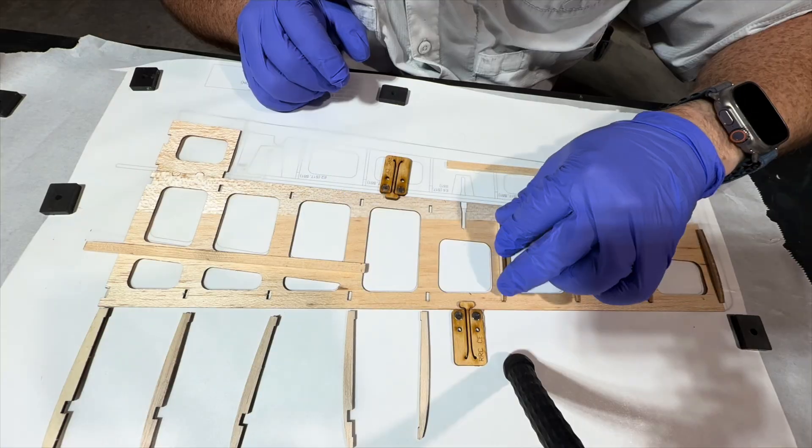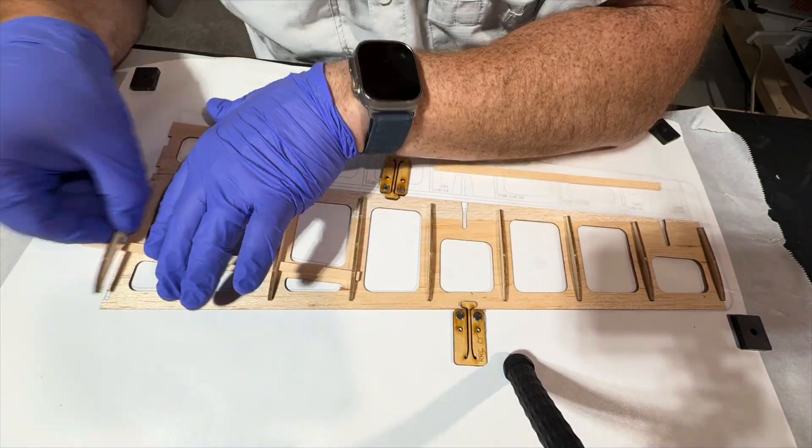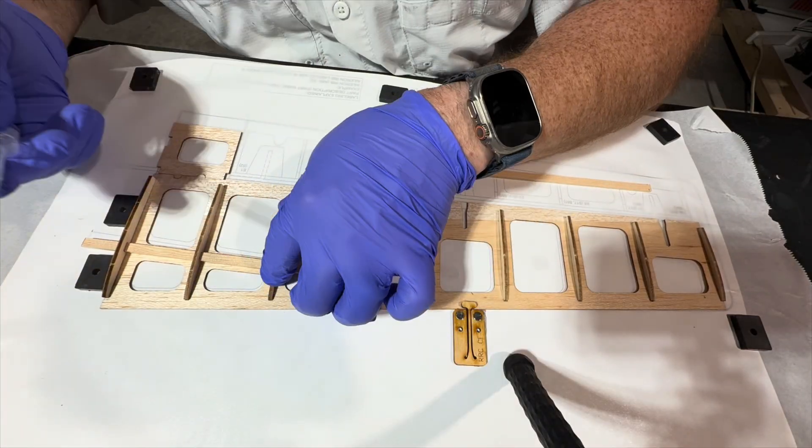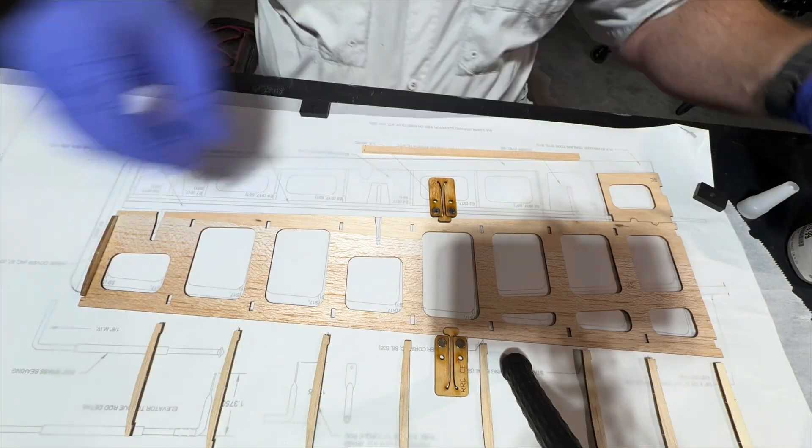So you can see here I went ahead and initially started building the horizontal stabilizer over top of the plans. Normally you would do this to make sure the parts are nice and straight but because everything interlocked everything just dropped right into place.